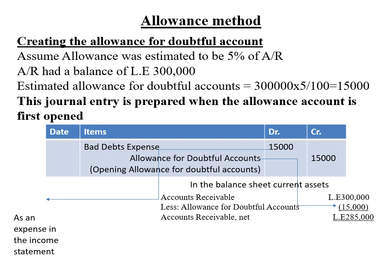On the other side, Allowance for Doubtful Accounts is credited by $15,000, and this goes to the balance sheet. In the balance sheet under current assets, you see accounts receivable minus the allowance for doubtful accounts, giving you the net accounts receivable. So the amount estimated to be uncollectible is recorded as: debit Bad Debt Expense, credit Allowance for Doubtful Accounts. This journal entry is prepared when the allowance is opened for the first time.